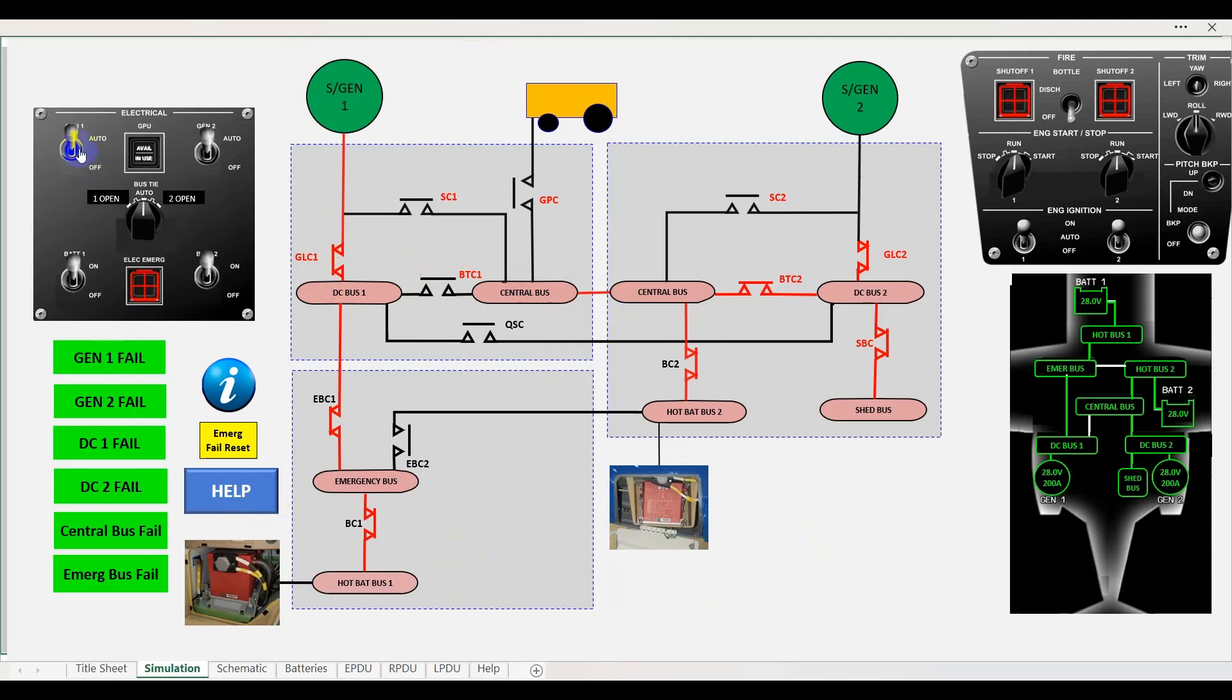We can switch the generator off if we want to. As you can see, the system will automatically close the bus tie. We can simulate opening up the bus tie, and now we've got three electrical systems. We've got number 1 engine supplying DC bus 1, number 2 engine supplying DC bus 2, and the number 2 battery supplying the central buses. But that's obviously not an ideal system.